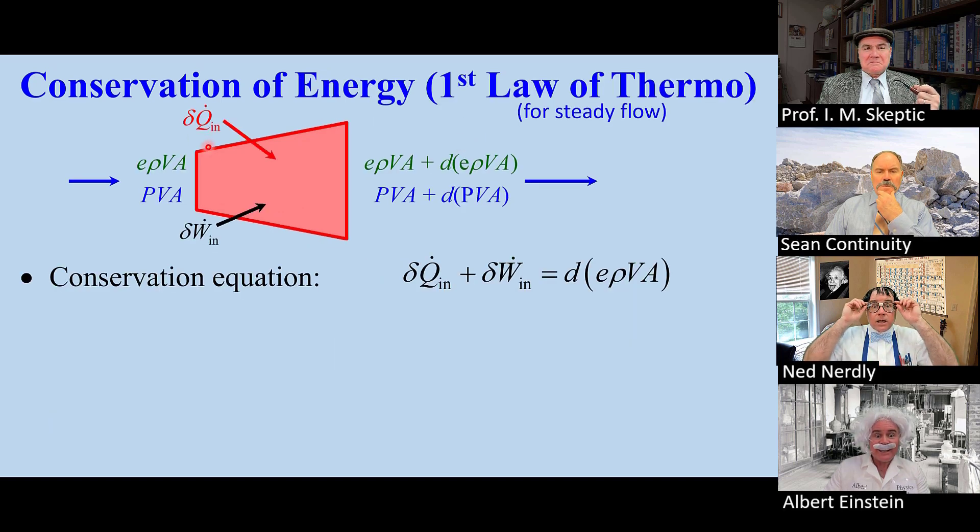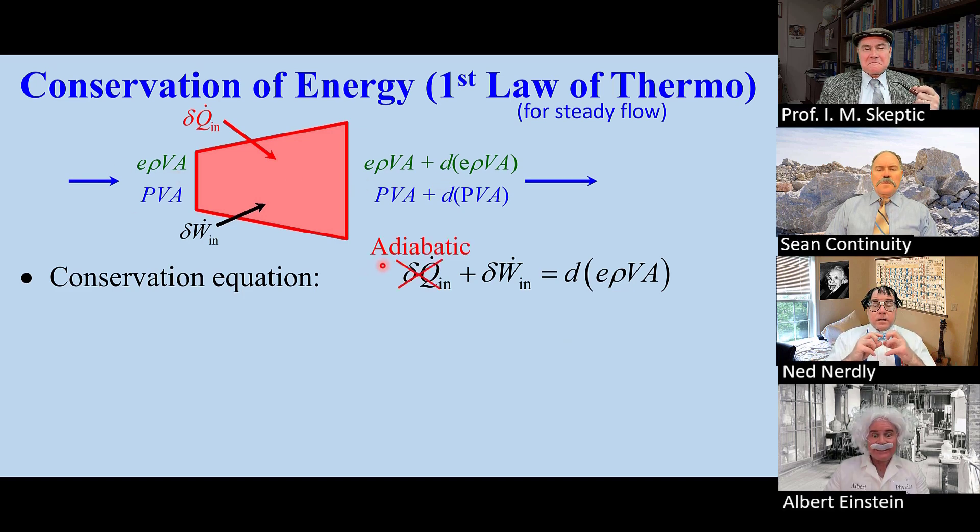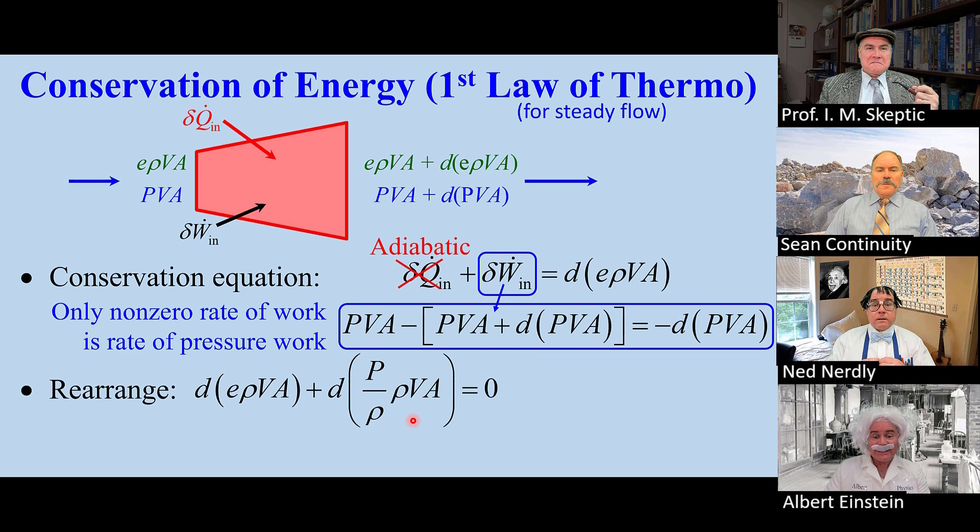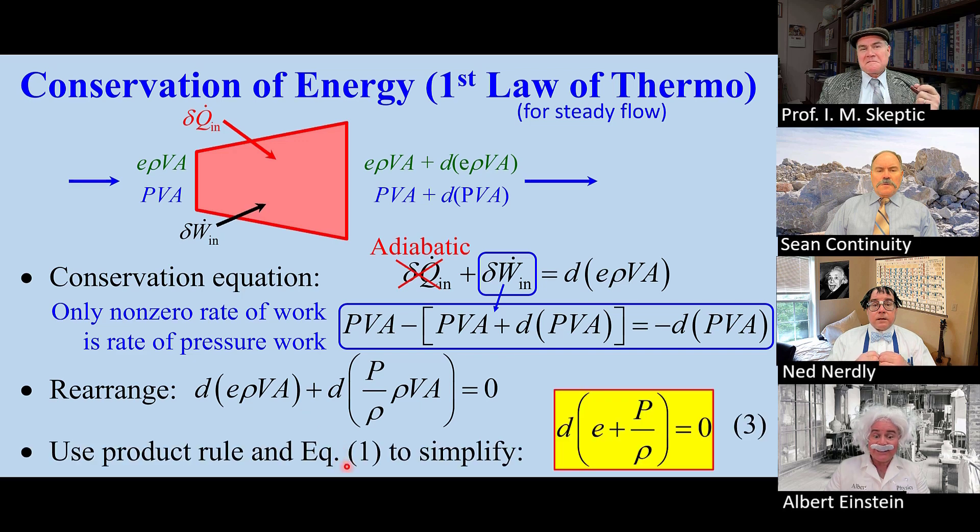Now we apply the first law. We have heat and work coming in and total energy flowing through. Here is the differential equation. But this term is zero, and the only non-zero rate of work is the rate of pressure work. Then we rearrange to get this equation. We use the product rule and equation one to simplify, getting equation three.